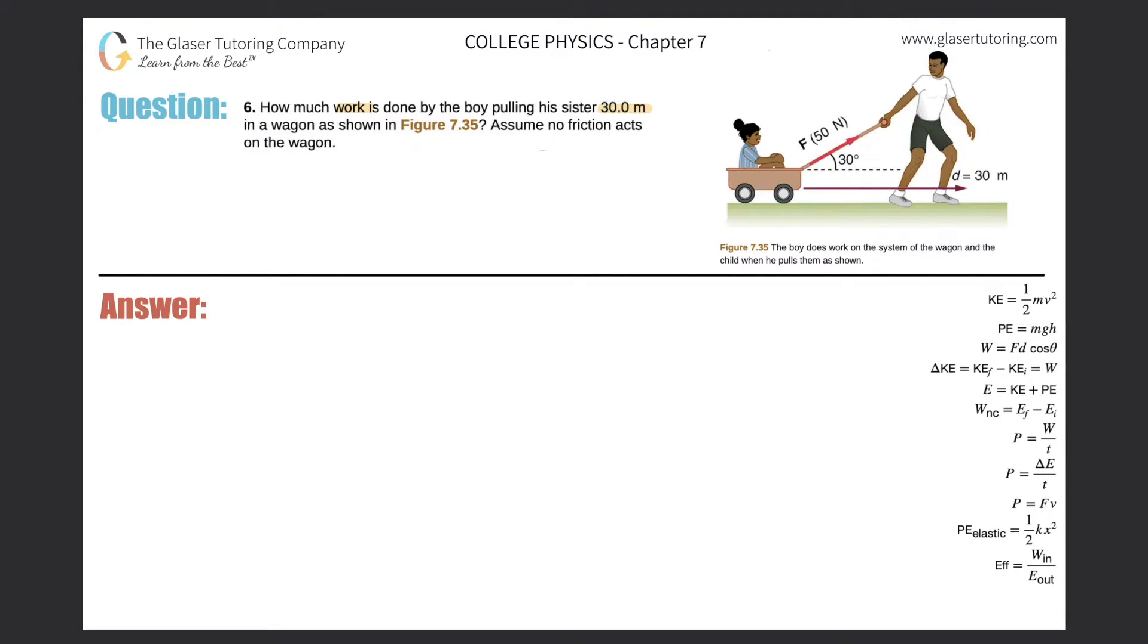The boy applies a force of 50 newtons at an angle of 30 degrees relative to the horizontal. And the wagon is going to move, as it says, 30 meters horizontally.